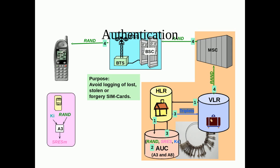Inside the mobile station, the random number is given to the SIM card which has Ki and the A3 algorithm. These two inputs generate the signed response on the mobile station side inside the SIM. This signed response is then sent over the air interface in the uplink direction to the BTS, then to the BSC, then to the MSC, and then to the VLR. In the VLR, the two signed responses are compared to check whether this is a valid user or not.